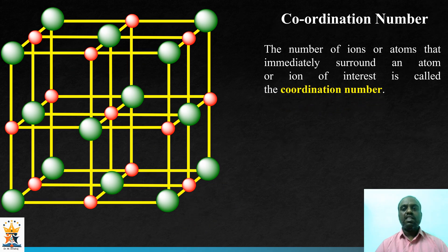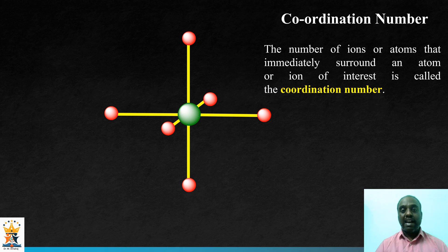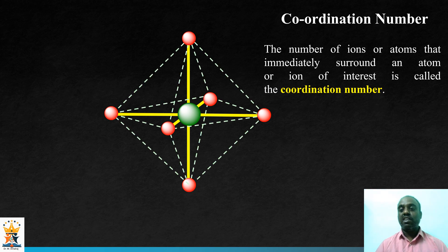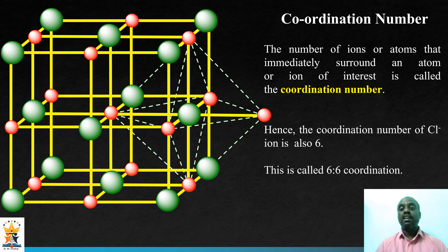Now we will calculate the coordination number of the chloride ion. Consider a chloride ion at a face center — it is connected with 5 sodium ions in this unit cell, and the 6th comes from the body center of the adjacent unit cell. It also forms an octahedral shape, so the coordination number of the chloride ion is also 6. Hence it is a 6:6 coordination type — both sodium and chloride ions have coordination number 6.